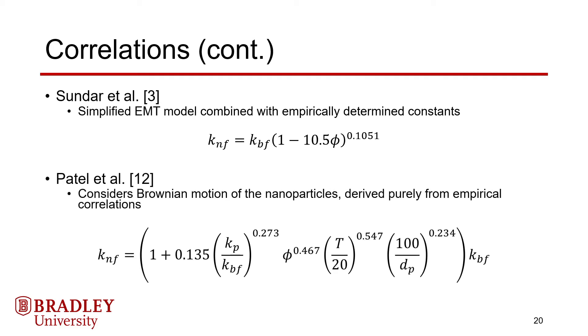Two examples of thermal conductivity models are treated here. One of the most simple is the Sundar et al. model, which is a simplified effective medium theory model aided by empirically determined constants. It solely captures the effects of particle concentration and base fluid thermal conductivity, making it simple in nature. Another example is the Patel et al. model, found empirically, which considers the effects of particle material, base fluid thermal conductivity, concentration, temperature, and particle size.